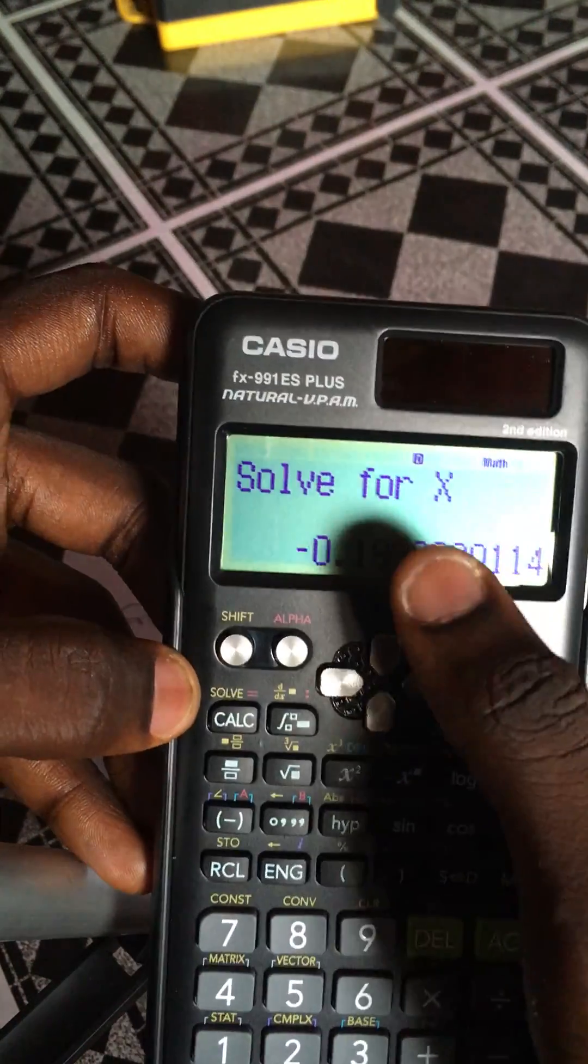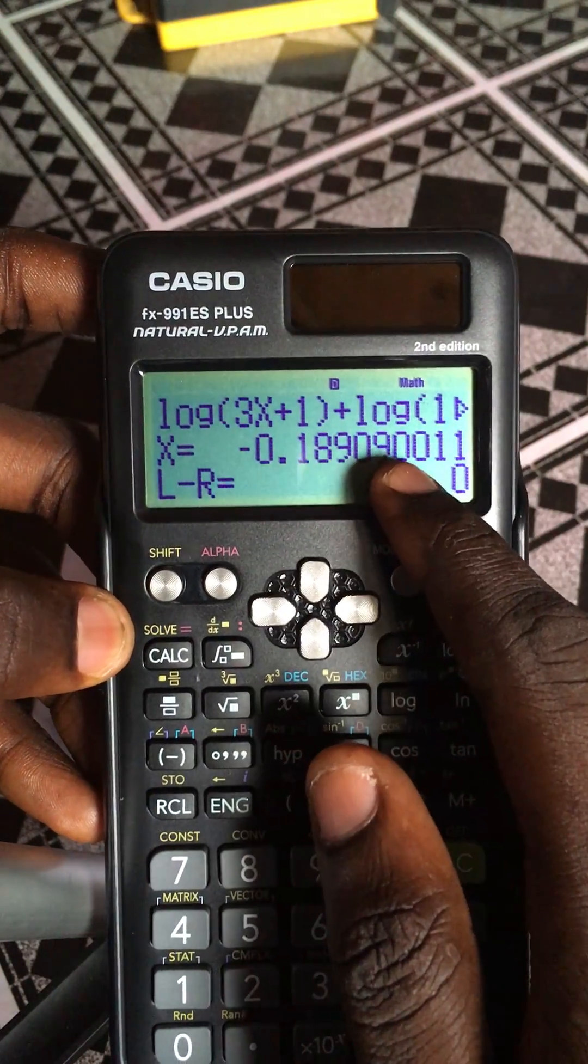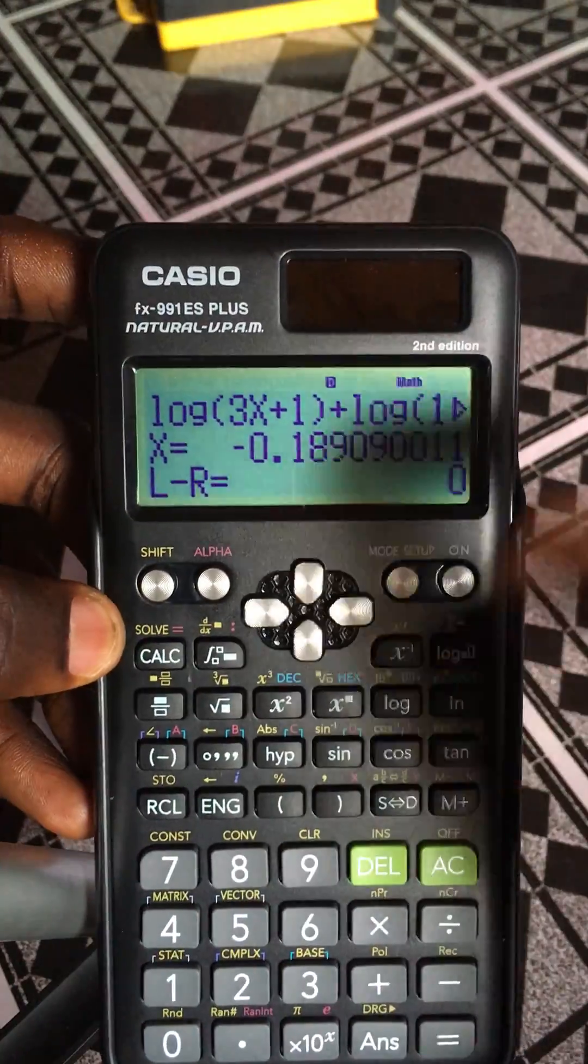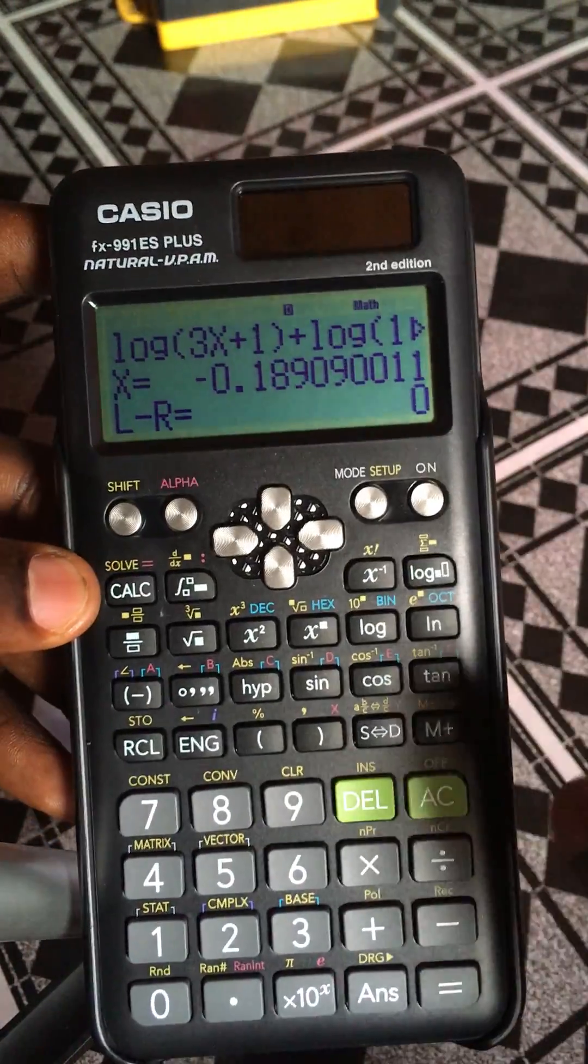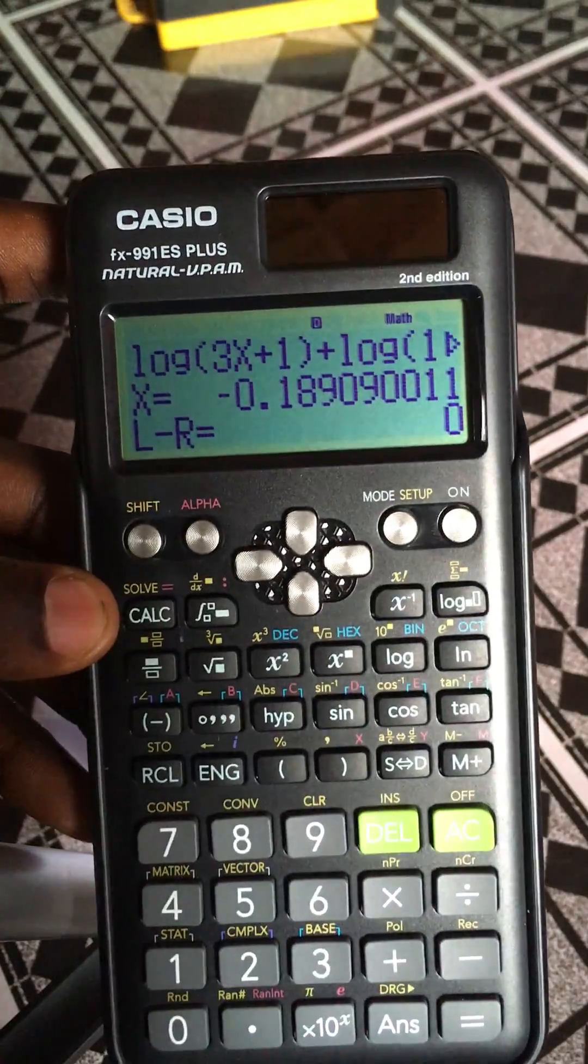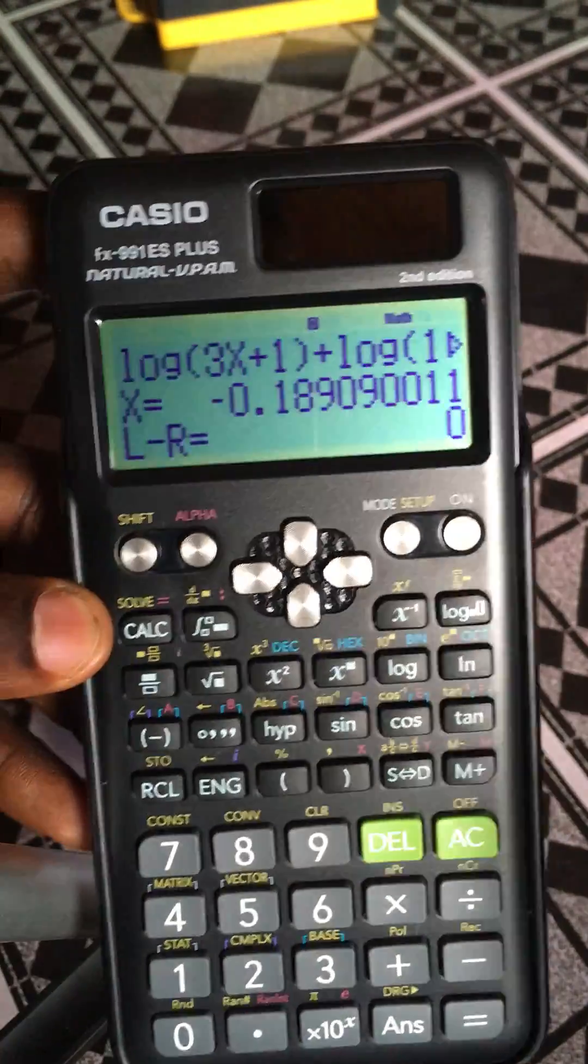Once you press equals to, it shows you the value. I've solved it earlier on, that's why it's quite faster, but when you're just solving it for the first time it's a bit slower. So that's just how you solve for any variable when you have an equation like that.